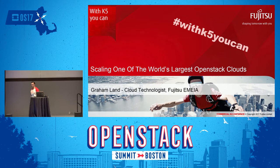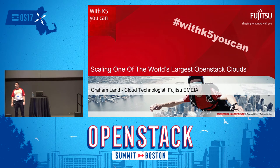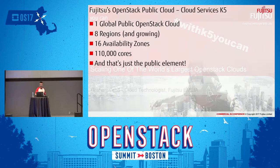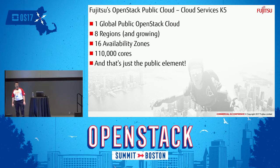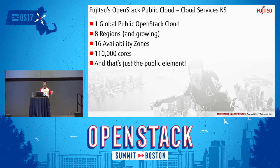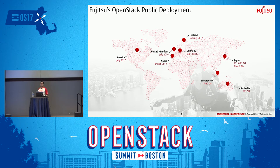Good afternoon everybody, thank you for coming to today's session. Hopefully by day three into OpenStack, everybody now knows that Fujitsu has an OpenStack public cloud called K5, or Cloud Service K5 to be precise. We have eight regions around the globe, sixteen different availability zones, a hundred and ten thousand cores and growing. That's just our public cloud side of things. Here you can see where we are today in the world.